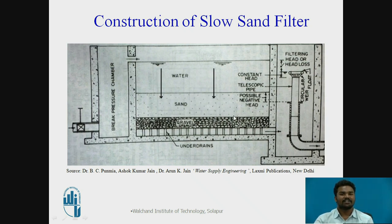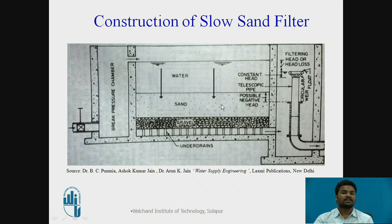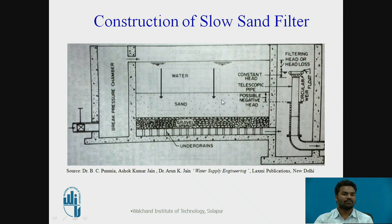The filter media consists of a sand layer of thickness 90 to 110 cm. The effective size of sand used for the filter media is 0.25 to 0.3 mm; generally 0.3 mm is taken. The coefficient of uniformity is taken as 0.3 for the sand.